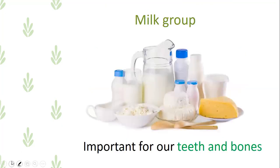The first group is milk group. Why is the milk group important? هاي المجموعة اللي بتألف من الملك and dairy products هي important because it's important for our teeth and bones. هي مهمة للأسنان والعظام لأنها تحتوي على كميات كبيرة من الكالسيوم.